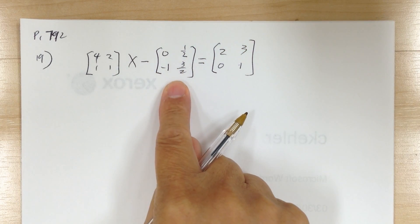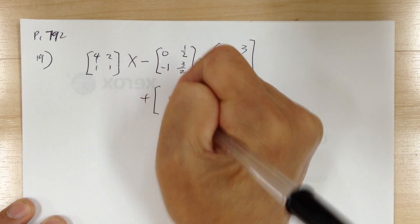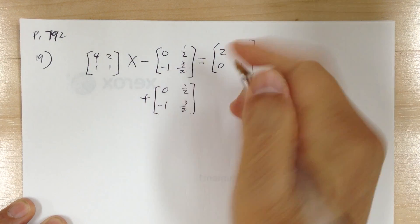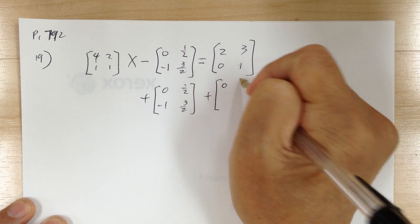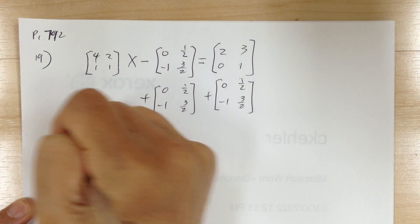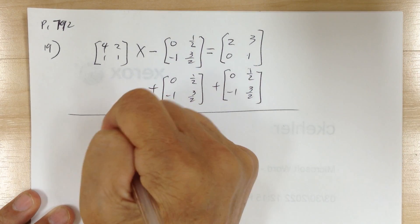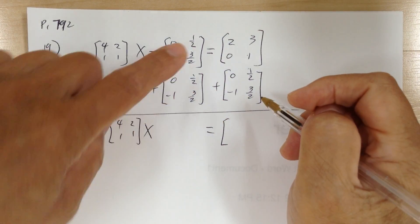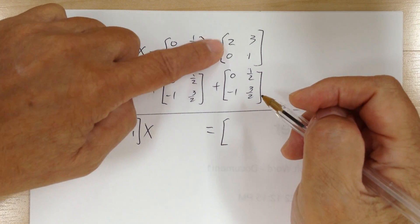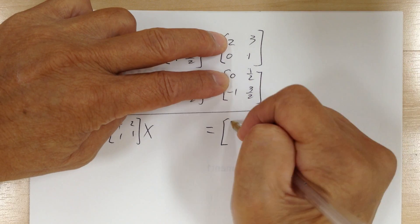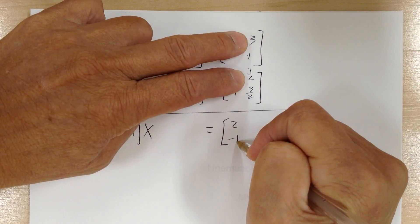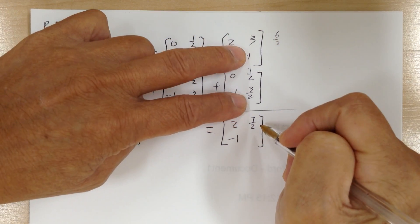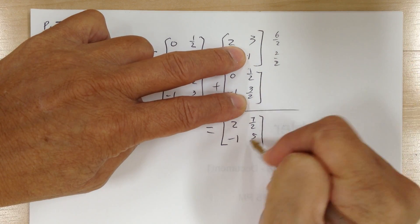To solve this, first we need to get rid of the subtracted matrix. Add it to both sides to cancel it out — just like regular math. This side gives [4, 1; 2, 1] · X. On the other side, adding corresponding entries: 2 and -1/2 plus 1/2 gives negative 1; 3 plus 3/2 gives 7/2; and 1 plus 3/2 gives 5/2.